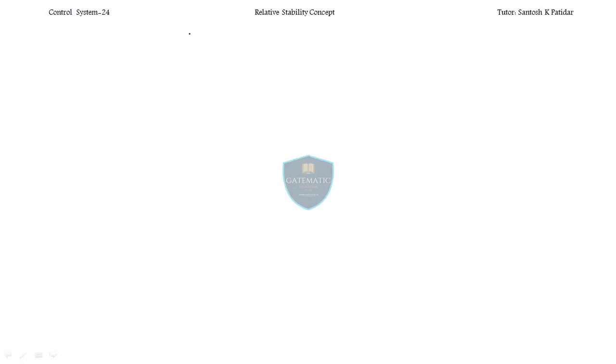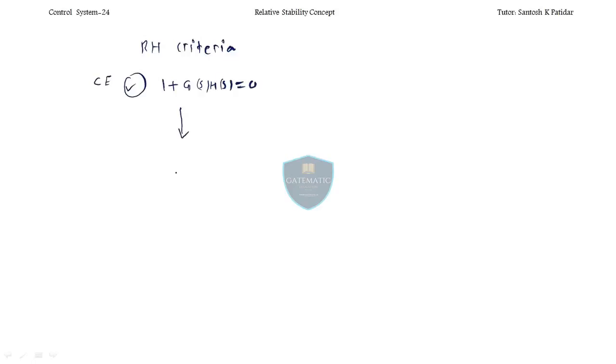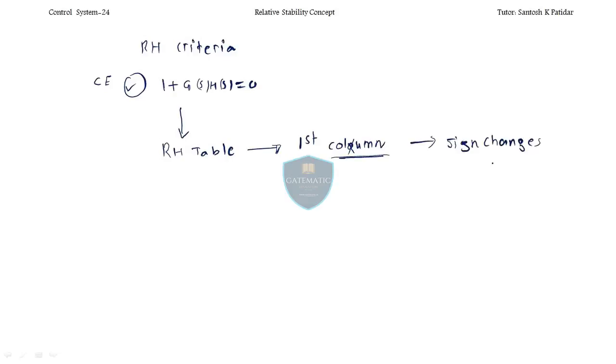Let me give a brief summary of what we did in this unit. We studied the R-H criteria, in which we consider the characteristic equation. First, we form the characteristic equation, then we prepare the R-H table. In the R-H table, we focus on the first column, and based on sign changes we conclude whether the system is stable or unstable.